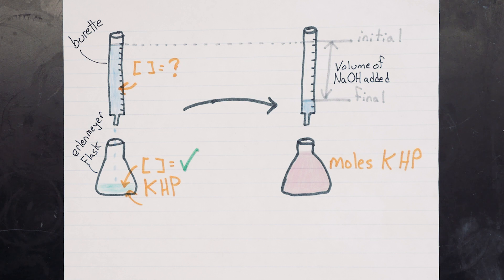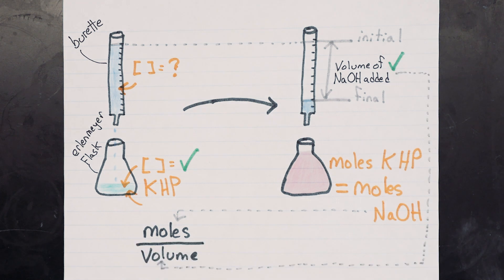we can measure how many moles of sodium hydroxide we have by measuring how many moles of KHP react with it. So we can measure the number of moles of sodium hydroxide we have, and we know the volume of sodium hydroxide we added. Calculating the concentration of the solution in terms of molarity is just dividing moles by liters.